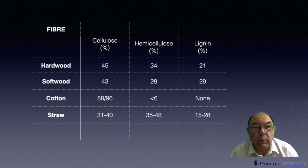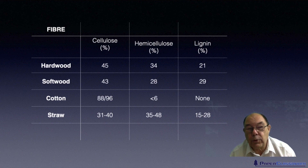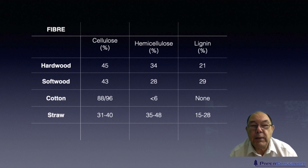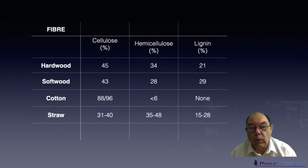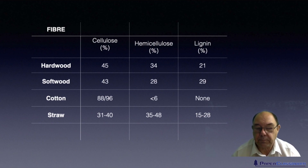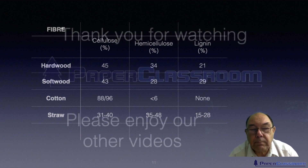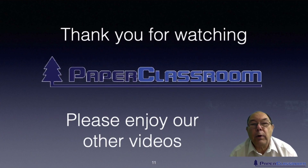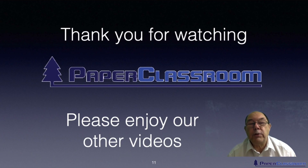The other thing to note is that hardwoods contain relatively less lignin than softwoods. Softwoods are the high-lignin-content trees; hardwoods are the low-lignin-content trees. This is why we only use softwoods for mechanical pulping — the idea being to get the whole wood chip hot, which softens the lignin so you can rip the fibres apart. There's not enough lignin to really do that in hardwood trees. Thank you very much for watching. Please enjoy our other videos and thank you for your time and attention.